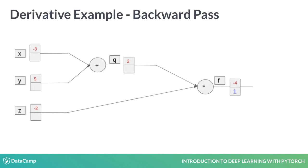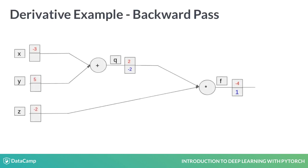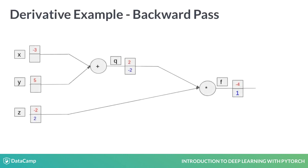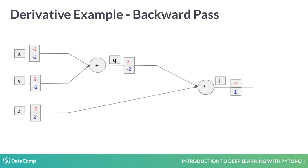Now let's compute the derivatives, placed in the blue boxes below the values of the nodes. The derivative of f with respect to itself is 1. The derivative of q is z due to the multiplication rule, times the derivative of f from the chain rule, giving us minus 2 times 1 equals minus 2. Similarly, the derivative of z is q times the derivative of f, equals 2. Finally, we compute derivatives of x and y. Because of the sum rule, the derivative is 1 times the derivative of q from the chain rule, giving us minus 2.